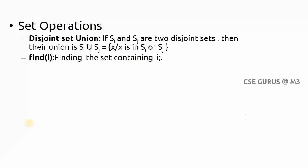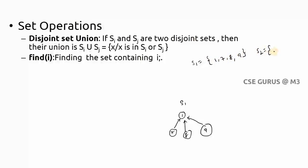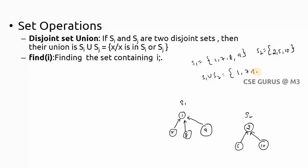If Si and Sj are two disjoint sets, then their union Si union Sj is the collection of all the elements. For example, S1 is a combination of {1, 7, 8, 9} and S2 is {2, 5, 10}. These are two disjoint sets. If we make S1 union S2, we represent all elements since there are no repeated elements in a disjoint set.